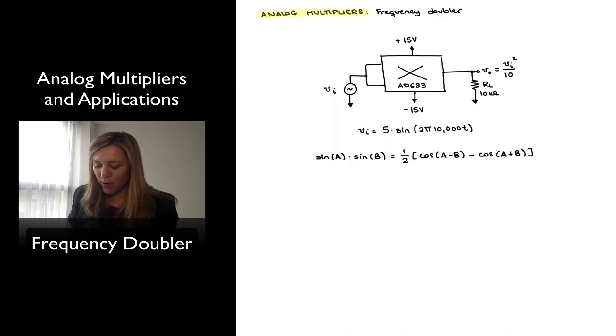First off I'm going to write out the expanded version of my output voltage. Vout again is equal to Vin squared, so 5 squared divided by 10 times sine, and that's going to be the square of 2π times 10,000t, all of that squared.